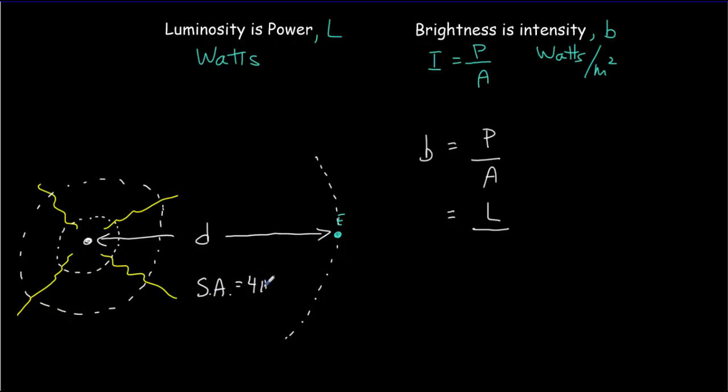The area, if we want to find the brightness on Earth, is just the surface area of this sphere. The surface area of a sphere is 4 pi times the radius squared. In this case, the radius is the star to Earth distance, so our surface area would be 4 pi d squared. All the power from that star is distributed over an area of 4 pi d squared. So we get b = L/(4πd²), which is the relationship we're looking for.